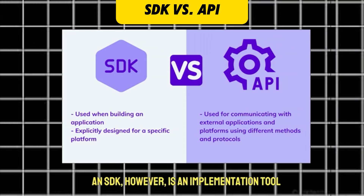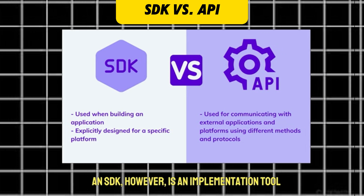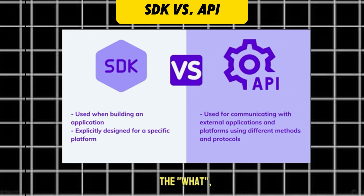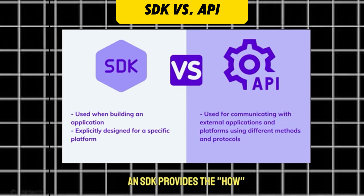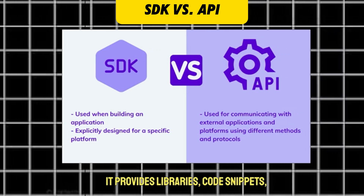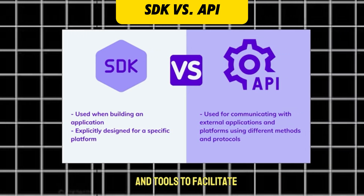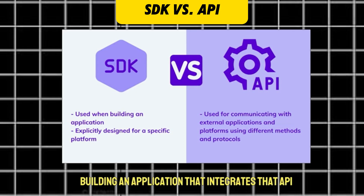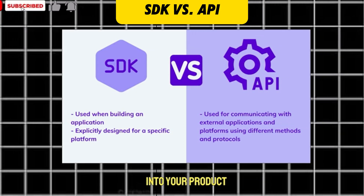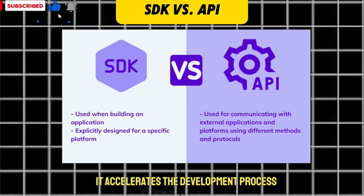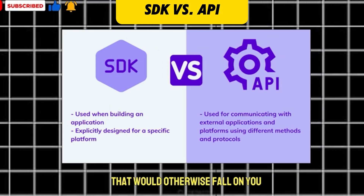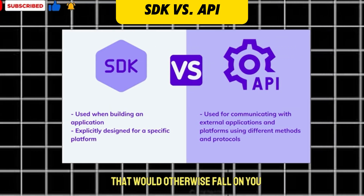An SDK, however, is an implementation tool. While an API gives you the interface — the what — an SDK provides the how. It provides libraries, code snippets, and tools to facilitate building an application that integrates that API into your product. It accelerates the development process by handling much of the setup and configuration that would otherwise fall on you.